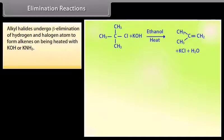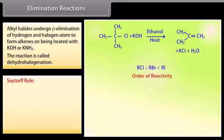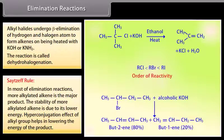Elimination reactions. Alkyl halides undergo beta elimination of hydrogen and halogen atom to form alkenes on being heated with KOH or KNH2. The reaction is called dehydrohalogenation. Saytzeff rule: In most elimination reactions, more alkylated alkene is the major product. The stability of more alkylated alkene is due to its lower energy. Hyperconjugation effect of alkyl group helps in lowering the energy of the product.